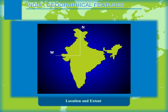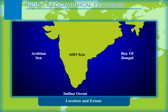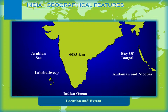India's land frontier in the northwest, north and northeast is 15,200 kilometers. The coastline of the mainland of India, that lies in the Indian Ocean and its two branches, the Arabian Sea and the Bay of Bengal, measures 6,083 kilometers. Including the islands of Lakshadweep in the Arabian Sea and the Andaman and Nicobar Islands in the Bay of Bengal, the coastline is 7,517 kilometers.